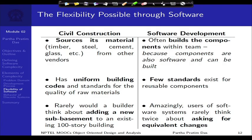Now let us look into the third element of software complexity: flexibility, made possible through software. Software is soft — it is flexible. There are primarily three points which you should be sensitive about; the third one you are already aware of, I am sure.